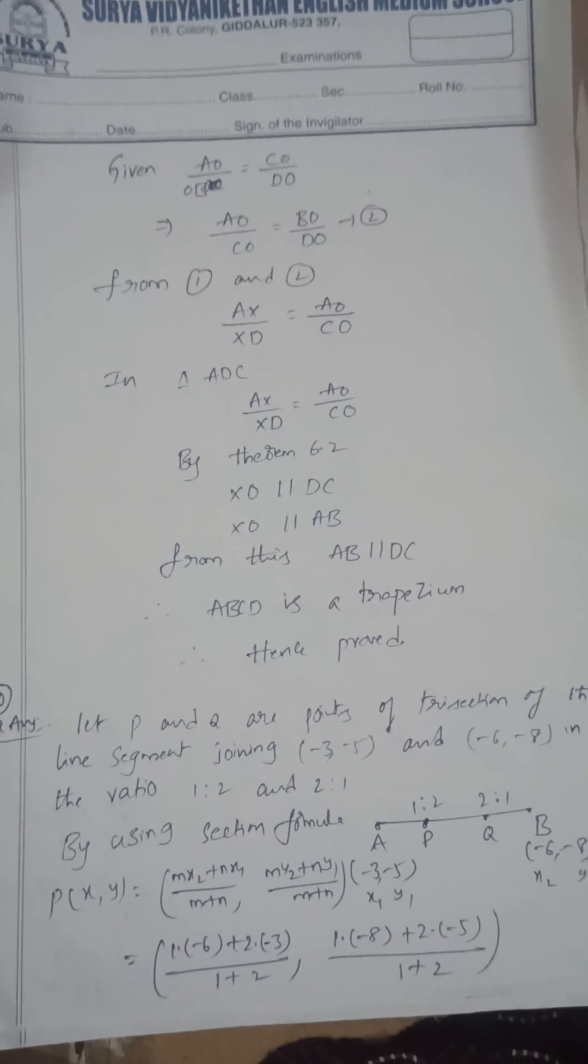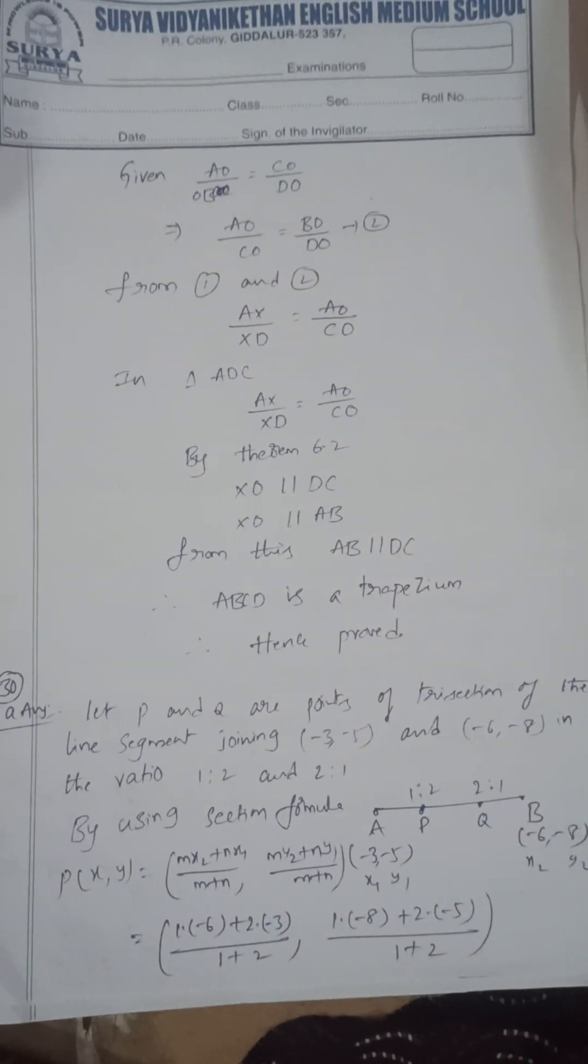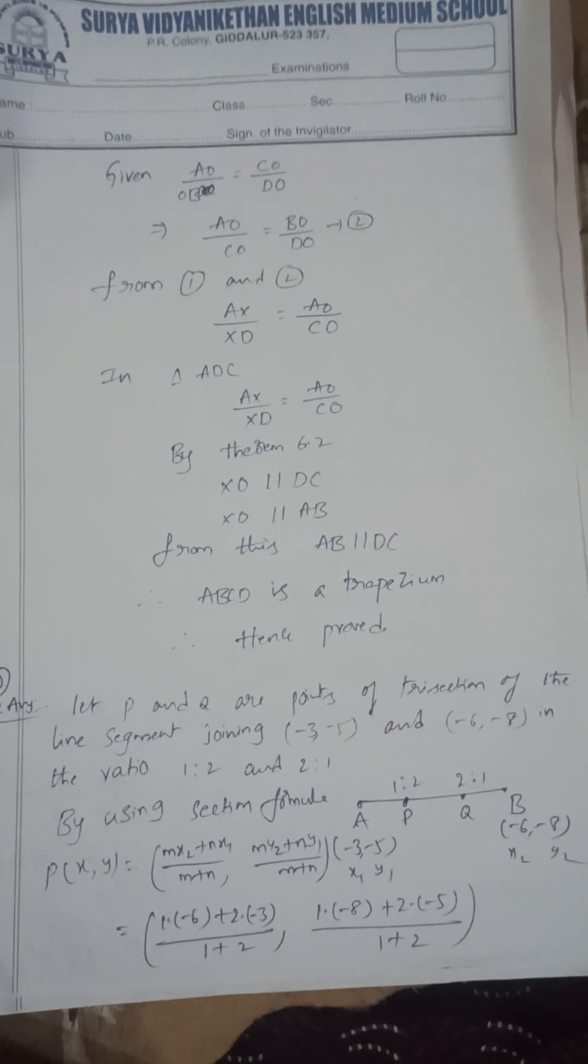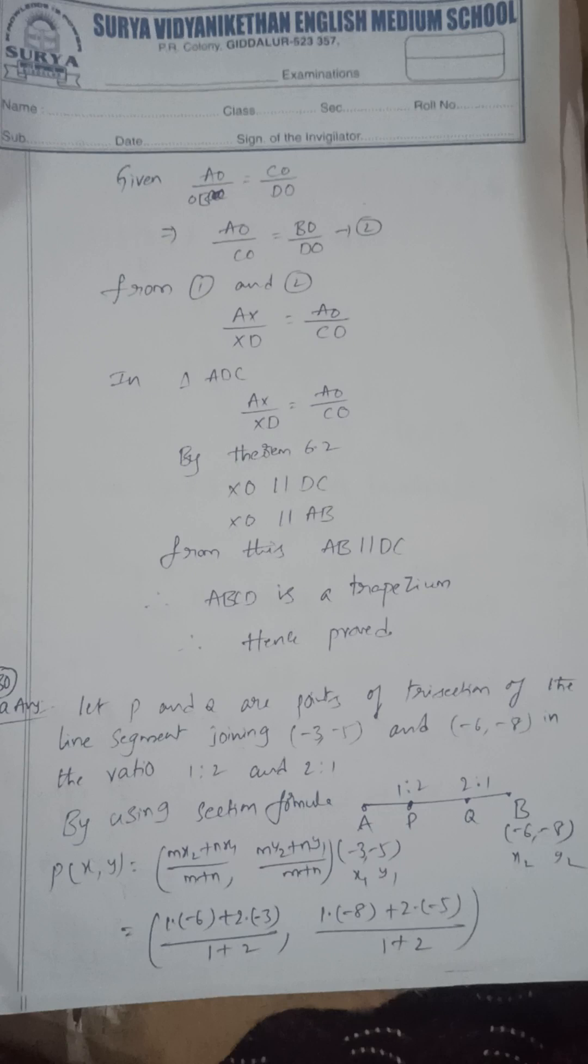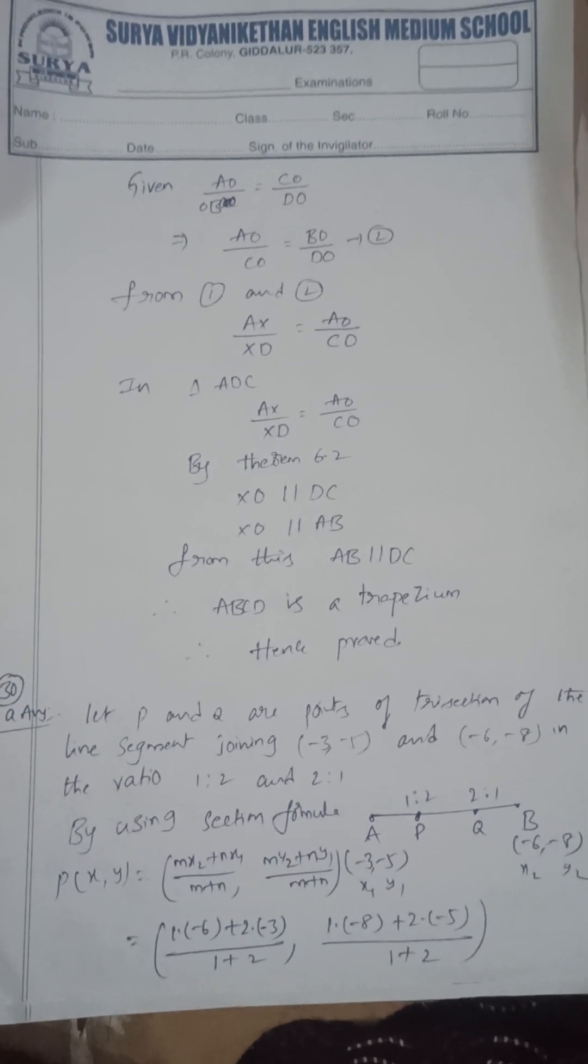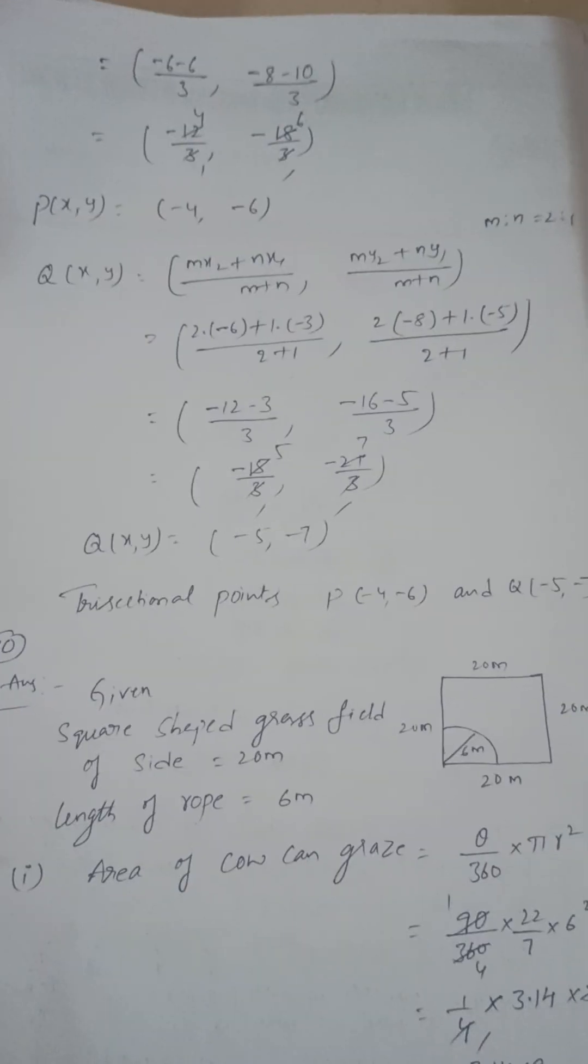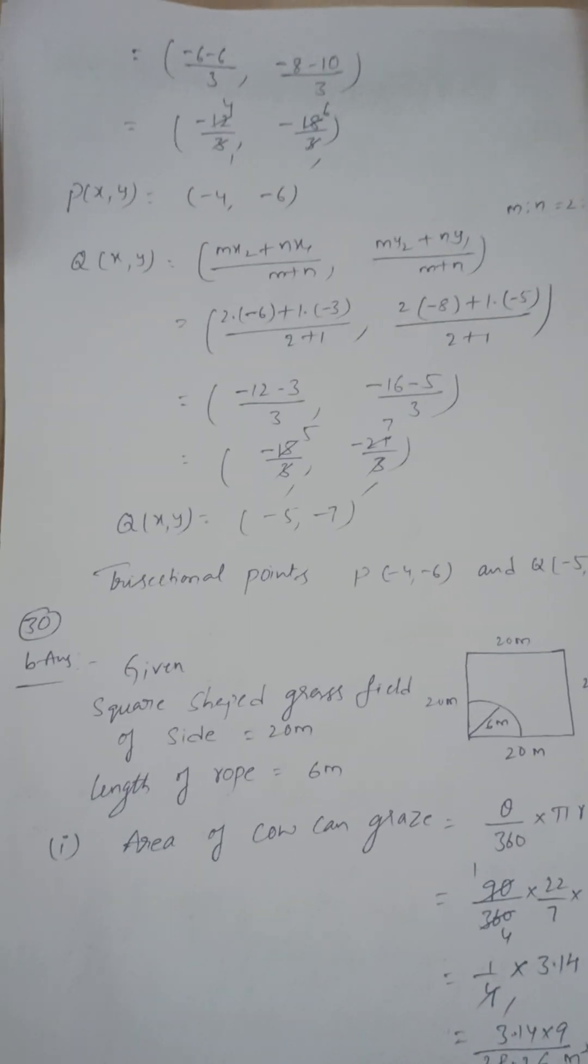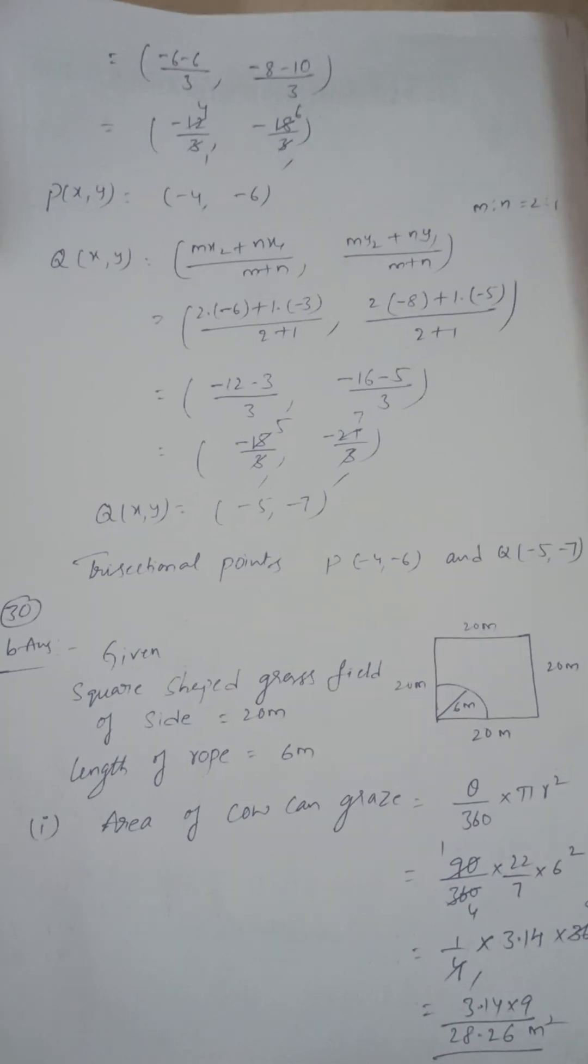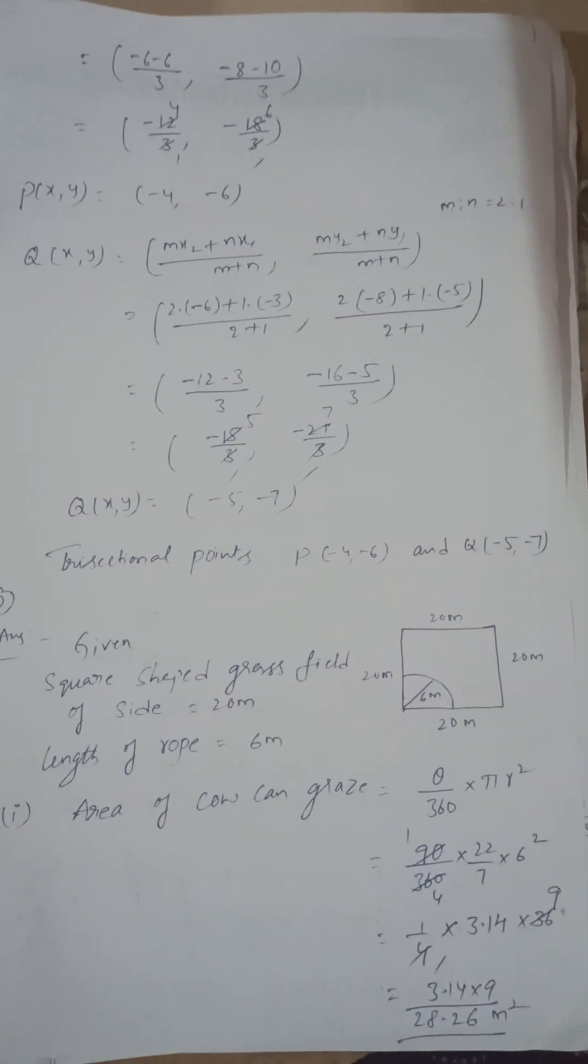Next, trisectional points P and Q are the trisectional points on the line joining the points minus 3 comma 5 and minus 6 comma 8 in the ratio 1 is to 2 and 2 is to 1. You can find by using section formula mx2 plus nx1 by m plus n, my2 plus ny1 by m plus n. So the trisectional points are minus 4 comma minus 6 and minus 5 comma minus 7.